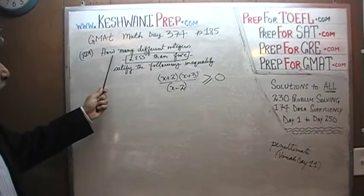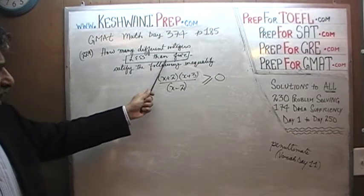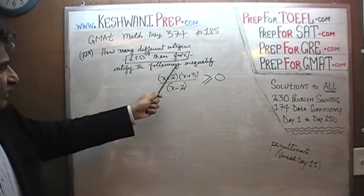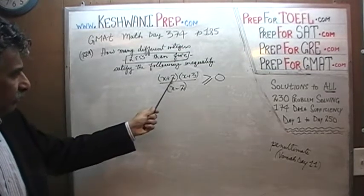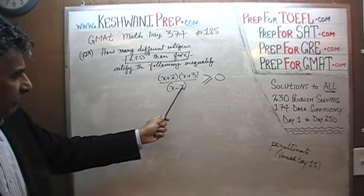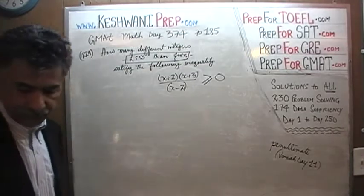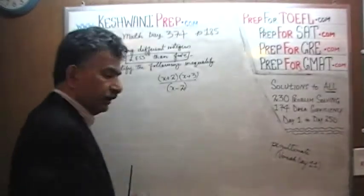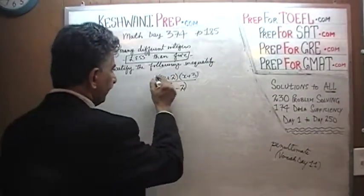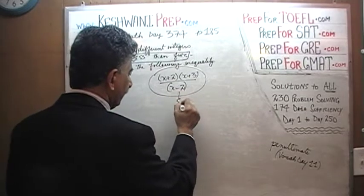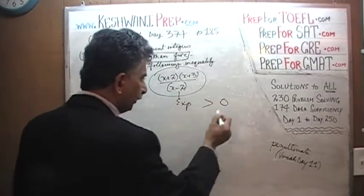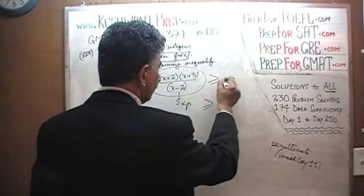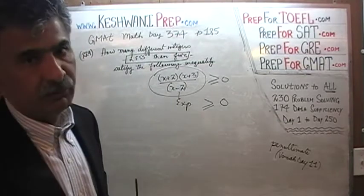The problem says: how many different integers less than 5 satisfy the following inequality — (x+2)(x+3) divided by (x−2) has to be greater than or equal to 0. The first thing we need to pay attention to is that this expression is allowed to be not only positive, but also equal to 0.